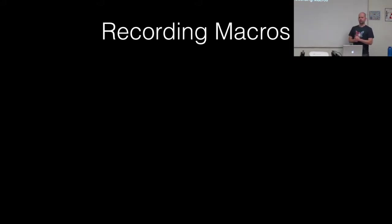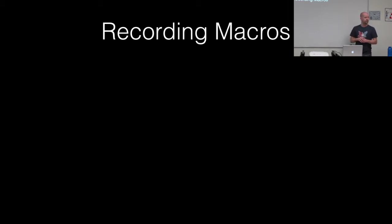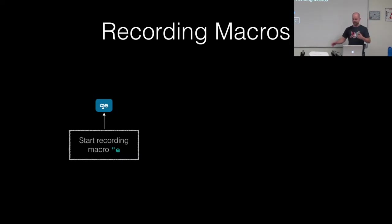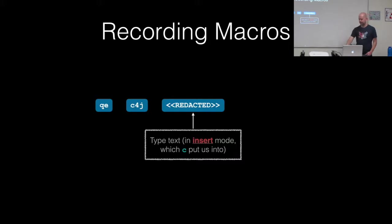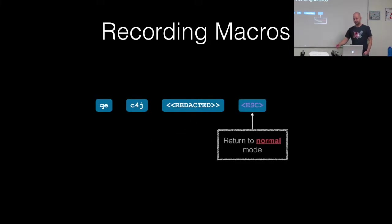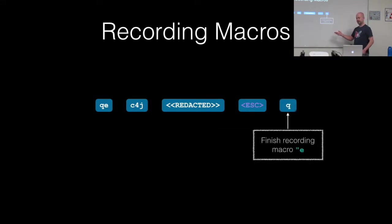An example of this would be: say we've got a file where we want to replace five lines of sensitive data with a redacted message. Because we don't want to retype all the commands over and over again, we're just going to record a macro. To get started, the first thing we press is QE — that says record macro into E. Then we run C4J, which changes the current line and four lines down, leaving us in insert mode so we can type our redacted message. Then we press Escape back into normal mode, and we're done recording, so we just press Q.